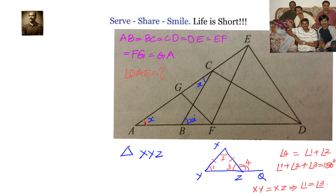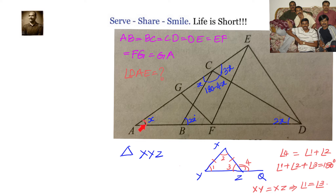We also know BC equals CD. Switching to triangle BCD, the base angles are equal, so angle CDB also equals 2X. Applying the angle sum property to triangle BCD, angle BCD equals 180 minus 4X. Applying angles on a straight line at point C, angle DCE equals 3X. Since CD equals DE, angle CED also equals 3X.